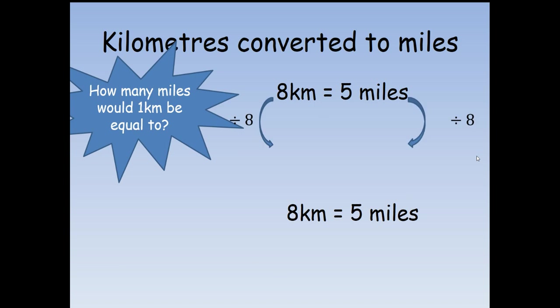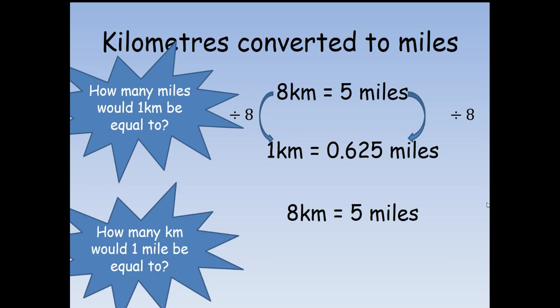If eight kilometers is five miles, then I could divide each side by eight to work out what one kilometer would be. Eight divided by eight is one, and five divided by eight is 0.625 miles. I could do the same going the other way. If I wanted to know how many kilometers are in one mile, I could divide both sides by five. Five divided by five is one mile, and eight divided by five is 1.6 kilometers.